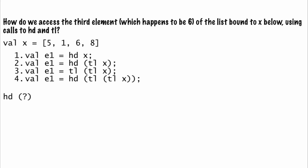So if head of something is 6, then that something must be the list 6 and 8. Now how do we get the list 6 and 8? Since we want a list, we have to use tail, which gives us the head of the tail of 1, 6, and 8.